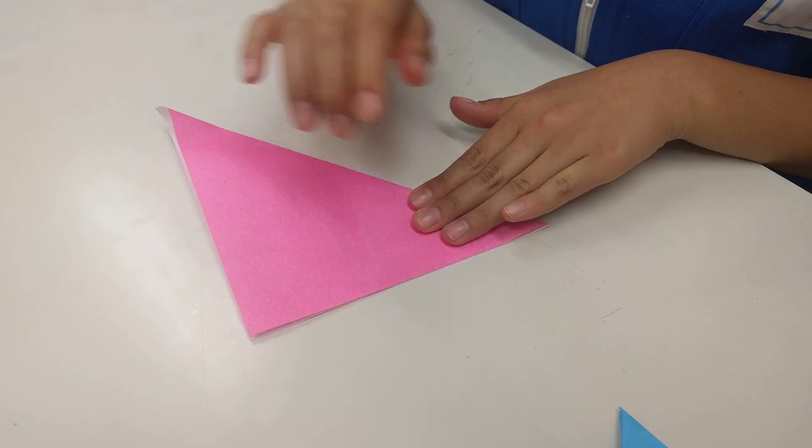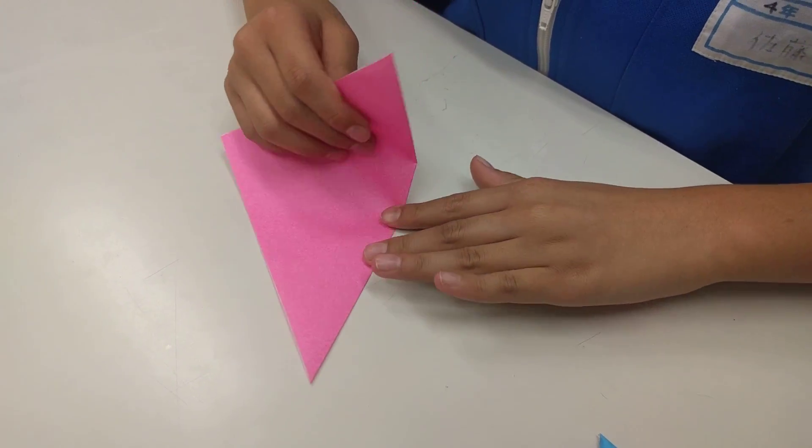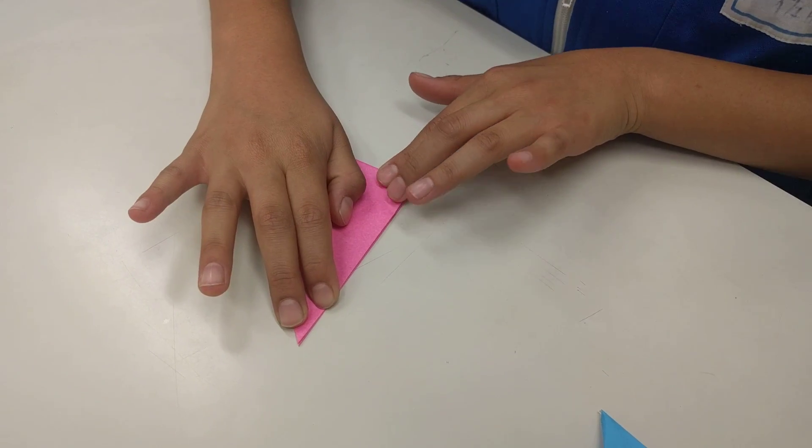So you fold it in half, make a big triangle. So far so good. Then fold it again, smaller triangle.